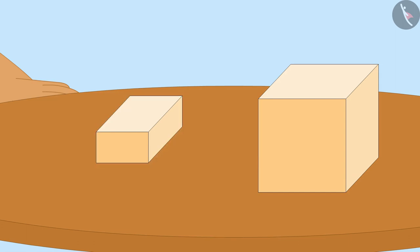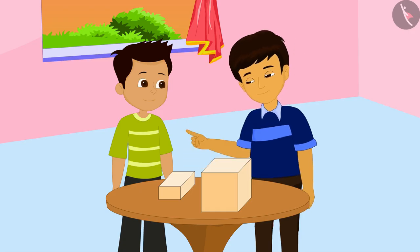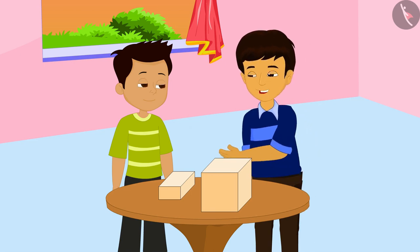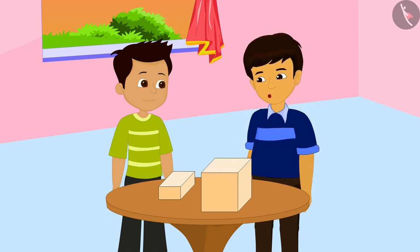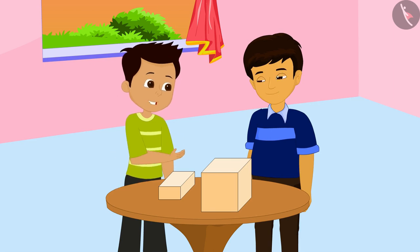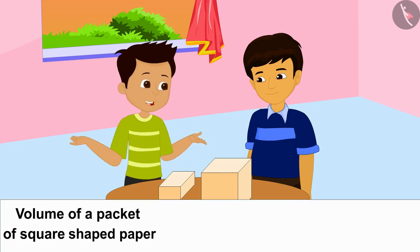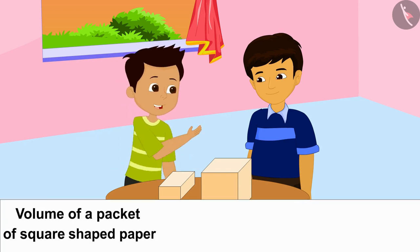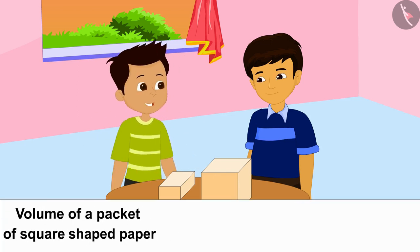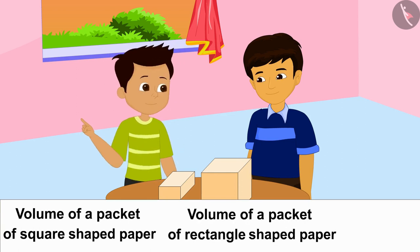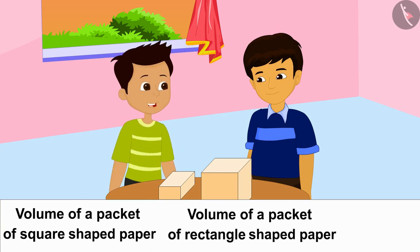Thomas, did you notice that the square shaped paper packets and rectangle shaped packets are taking up different spaces? Yes, that is because the volume of a packet of square sized papers and the volume of a packet of rectangle sized papers are different.